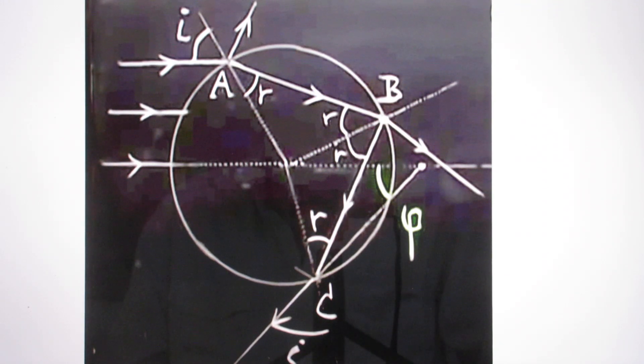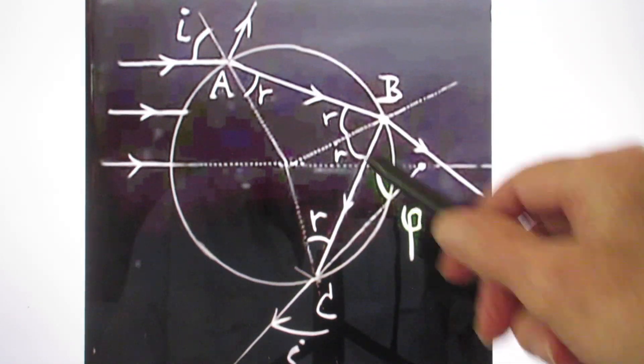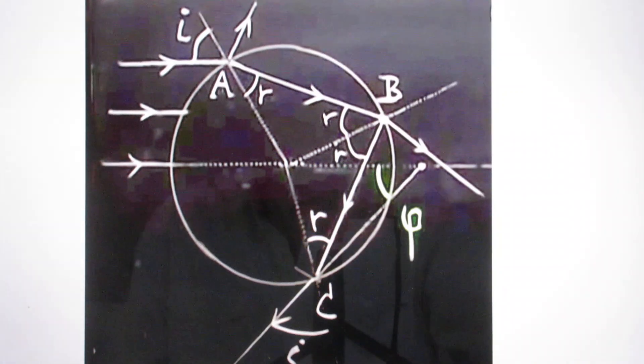In other words, if you want to calculate what the relation is between I and phi in terms of that maximum value for phi, you will have to calculate d phi di. Yeah, d phi di will give you a minimum or a maximum, in this case it will be a maximum.